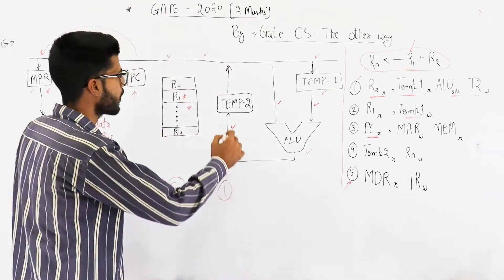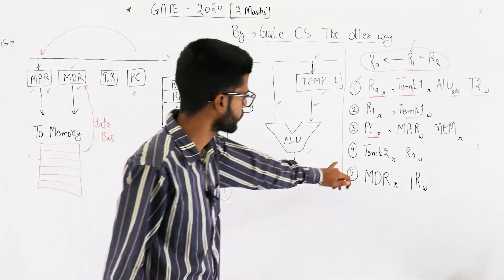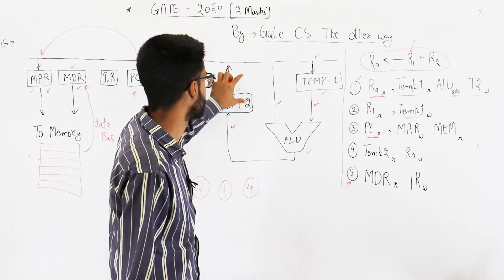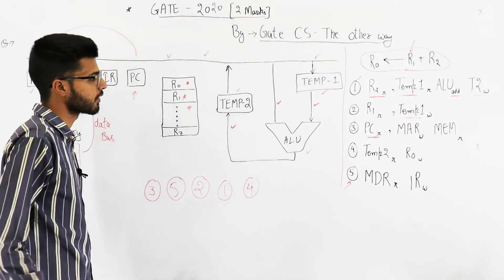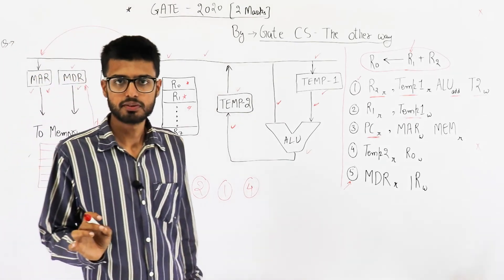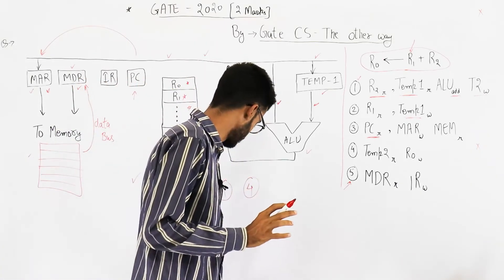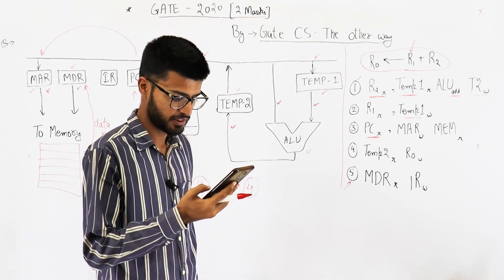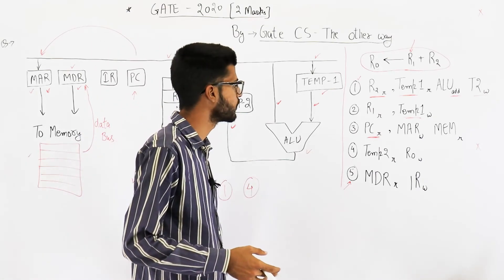We've added R1 and R2, and the result is now in temp2. The only remaining step is to copy this result into the desired destination, which is R0. In step 4, temp2 is given a read signal so the bus reads from it, and R0 is given a write signal so R0 copies the value. By executing these five steps in the order 3, 5, 2, 1, 4, we can effectively add the two values. The answer is option C. Hope to see you in the next video.